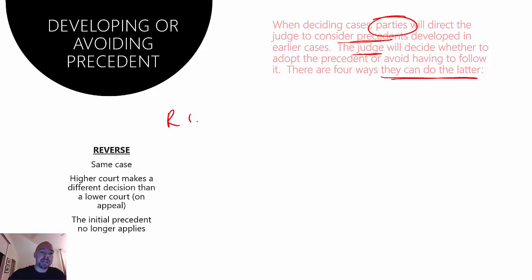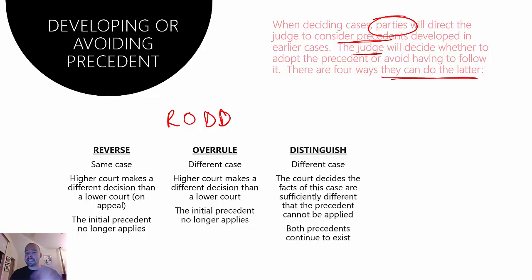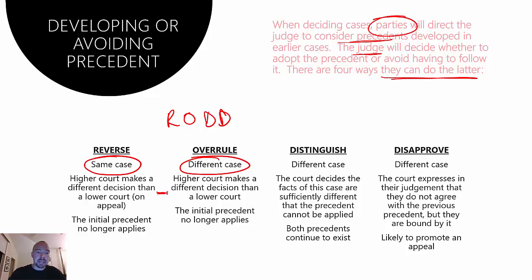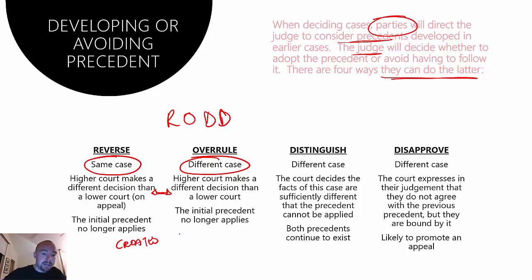There are four ways a judge can avoid having to follow precedents, and this is the acronym ROD: reverse the precedent, overrule the precedent, distinguish the precedent, or disapprove the precedent. Reversing is when we're talking about actually the same case. Reversing and overruling are really similar — it's when a higher court makes a different decision than a lower court. The higher court goes, 'I'm not going to follow that decision; I'm going to make a different one,' and as a result, creates a new precedent. The initial precedent no longer applies.